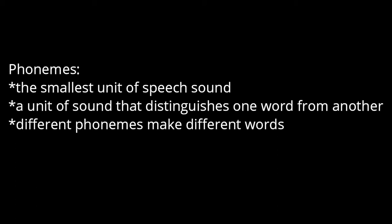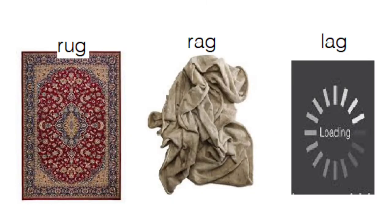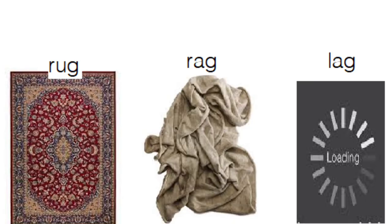For example, consider these words: rug, rag, and lag. Rug means a floor mat, rag means a cleaning cloth, and lag means to be left behind. The fact that the sounds ʌ and æ and læ and ræ make different words demonstrates that these sounds are phonemes of English.